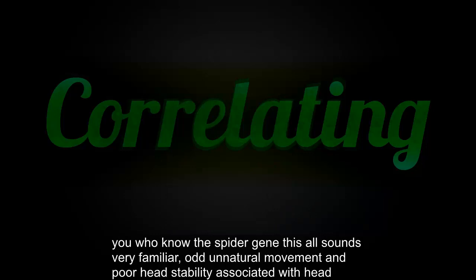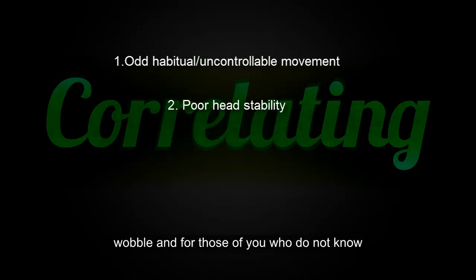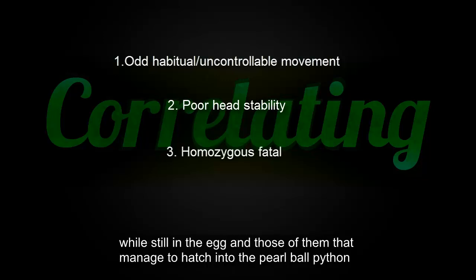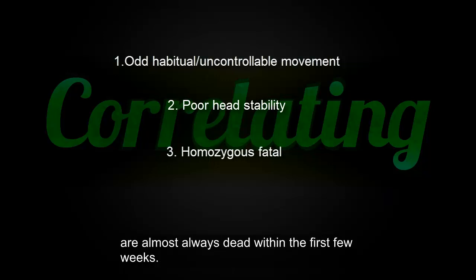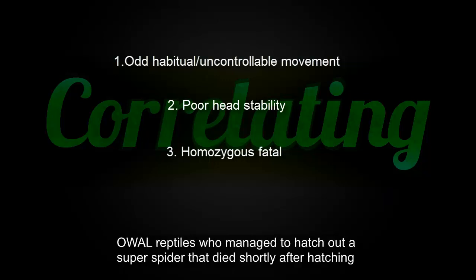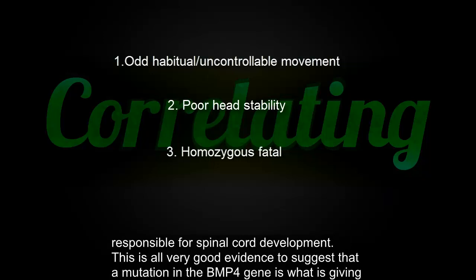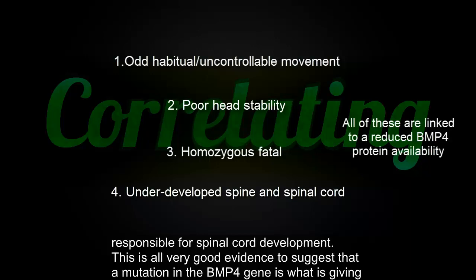Now for those of you who know the spider gene, this all sounds very familiar — odd unnatural movement and poor head stability associated with head wobble. And for those of you who do not know, whenever you combine spider to spider to create super spiders, they nearly always die while still in the egg, and those that manage to hatch into the pearl ball python are almost always dead within the first few weeks. A reptile owner who managed to hatch out a super spider that died shortly after hatching brought it to a vet and discovered that the spinal cord was underdeveloped, which is interesting because BMP4 is also partially responsible for spinal cord development.